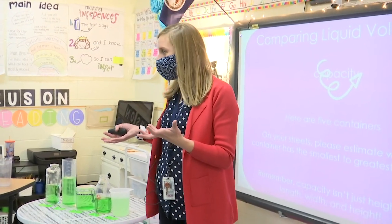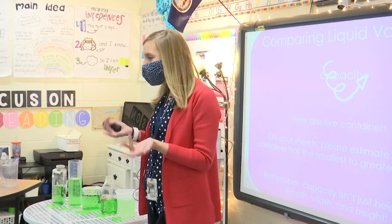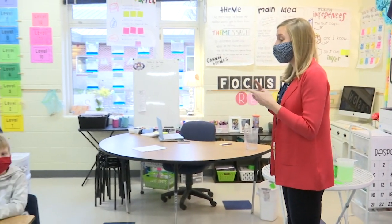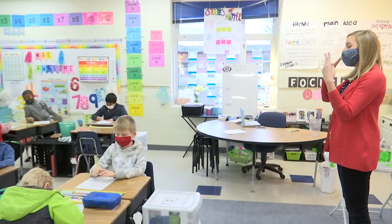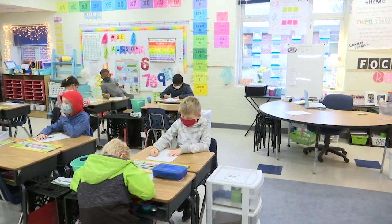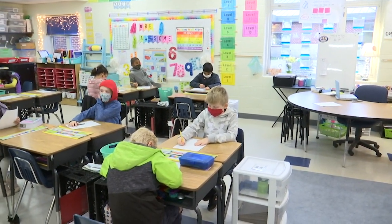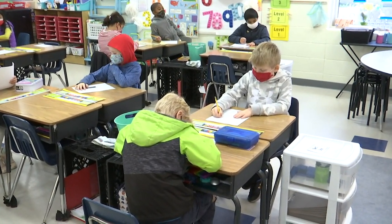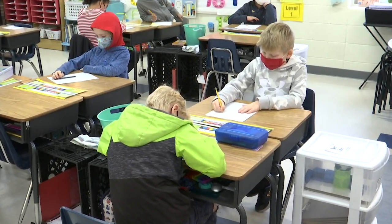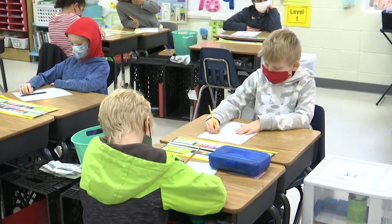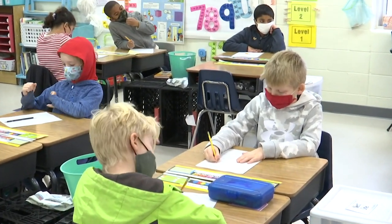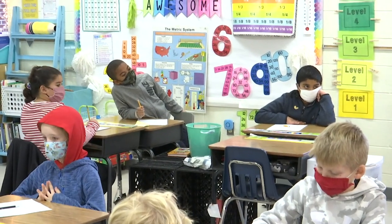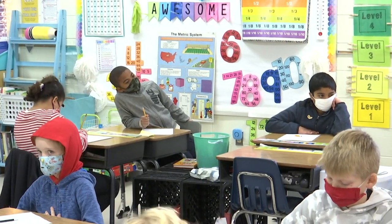So whatever number you think is the greatest, write that first. Go ahead and write the one that you think has the greatest capacity. If you think number one has the greatest capacity or greatest liquid volume, write one in the top box. If you think number two, write number two in the top box, and so on — rank them. I'm going to give us two minutes to rank and then to explain your mathematical thinking. Think about what we've learned about capacity, how we think about capacity, the different measurements we can use. You're filling out your greatest to least and how you know. Two minutes, begin.